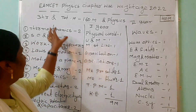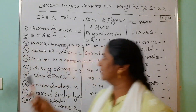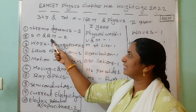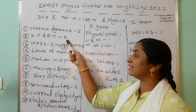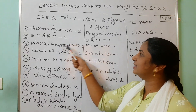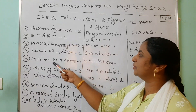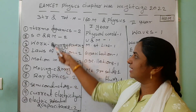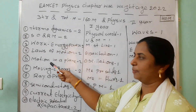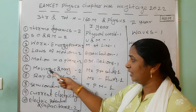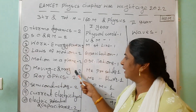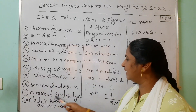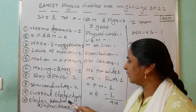These are the very very important chapters. Thermodynamics — you are expecting two marks. System of particles and rotational motion — two marks, sometimes three also. Work energy power — two. Laws of motion — two. Motion in a plane — two. These five are from first year topics. Then moving charges and magnetism — it's a very big chapter, you are expecting two questions. Ray optics also two, semiconductors also two, current electricity two, and electric potential and capacitance — these five belong to second year.